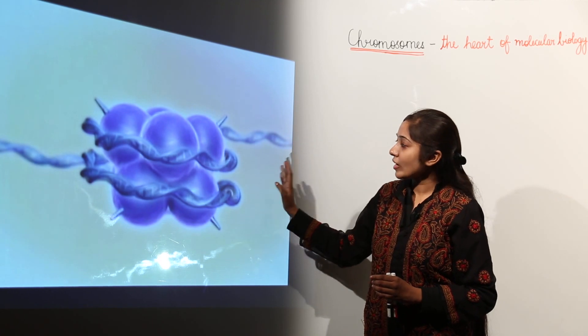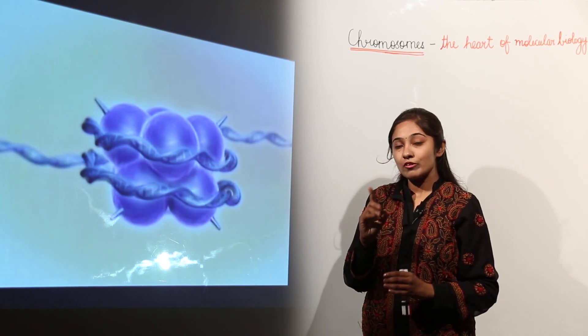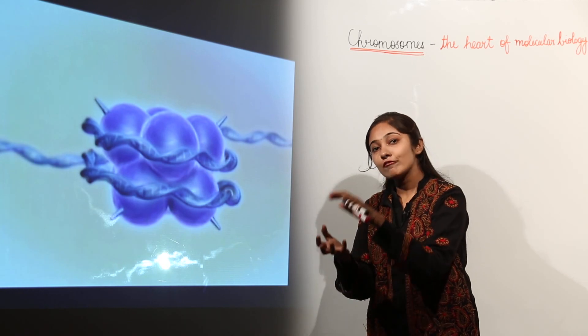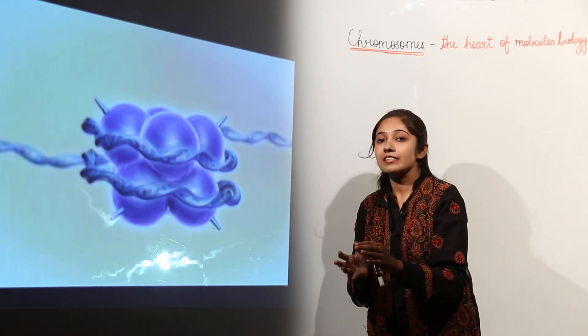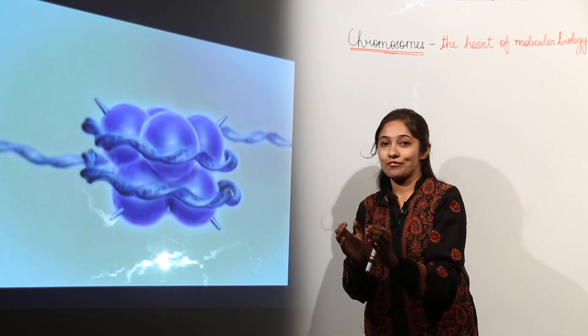So this is the structure of one nucleosome which is repeated, which is further condensed and forms that chromatin material, and that chromatin material arranges itself in the form of chromosomes in the nucleus of a cell.